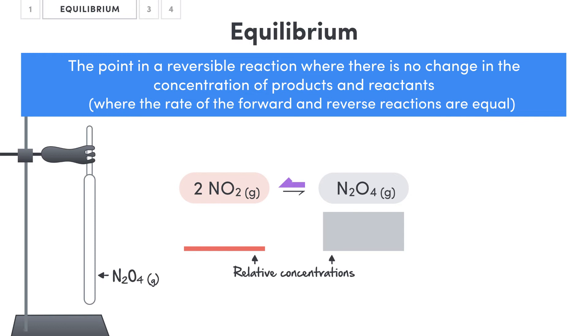This means that we'll get a net conversion of dinitrogen tetroxide into nitrogen dioxide. This change can even be observed visually since the tube gradually becomes more of a red-brown color, indicating an increasing concentration of nitrogen dioxide and therefore a faster reverse reaction than forward reaction.